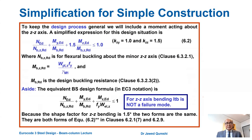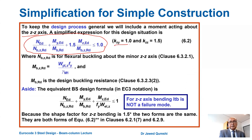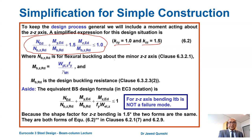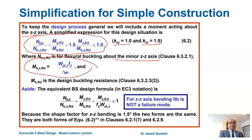For hand calculations, there is a simplification for simple construction. When moment is happening about the z-z axis, we can use the formula where kzy equals 1 and kzz equals 1.5, where 1.5 is a shape factor — i.e., plastic section modulus divided by elastic section modulus. This means that for H sections or rectangular sections, there is a 50% reserve capacity from elastic to plastic range. NbZ,Rd is the flexural buckling resistance about the z-axis. A similar formula exists in the old British codes.